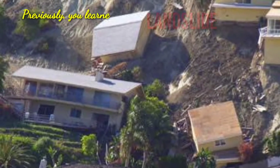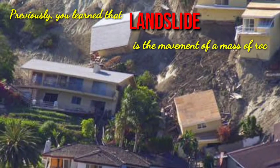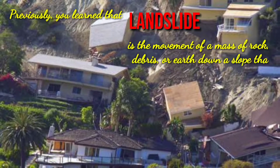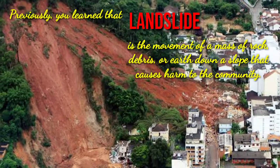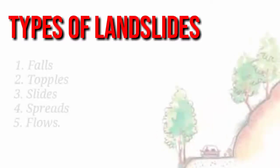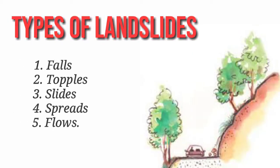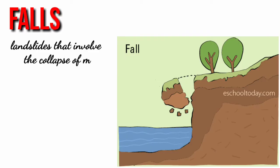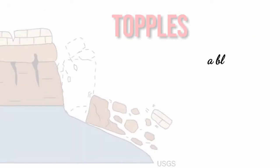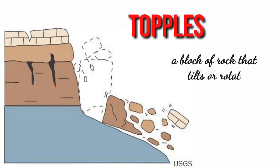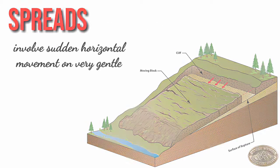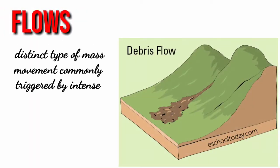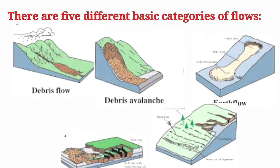Previously, you learned that a landslide is the movement of a mass of rock, debris, or earth down a slope that causes harm to the community. You also learned that there are different types of landslides: the falls, the topples, the slides, the spreads, and the flows, which has five different categories.